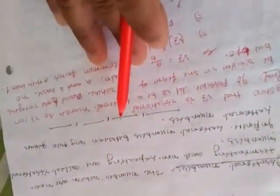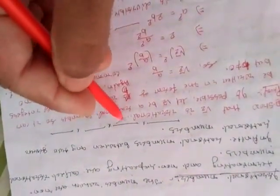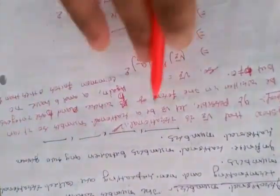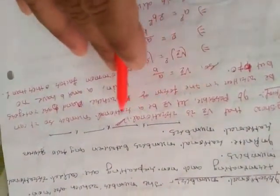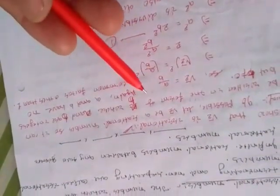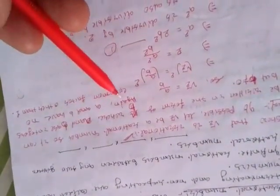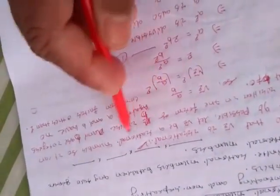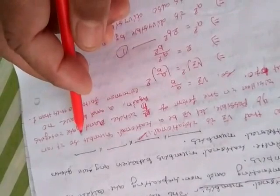Now students, let us look at some problems related to this chapter. Our first question is: show that √2 is an irrational number. We have to show that √2 is irrational, and this can be proved by the contradiction method. If possible, let √2 be a rational number.